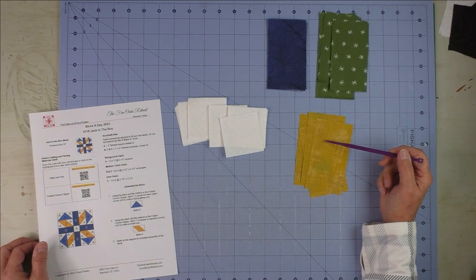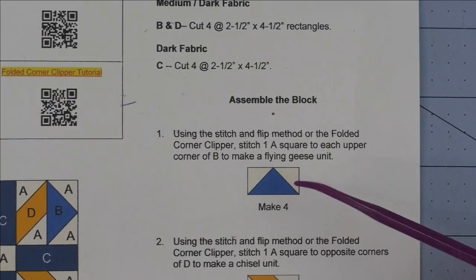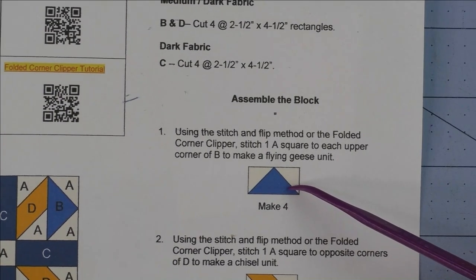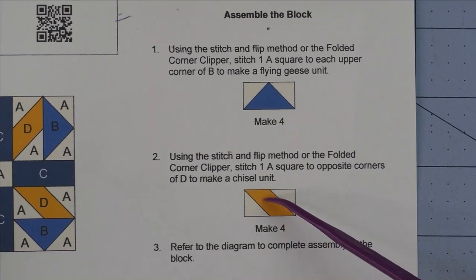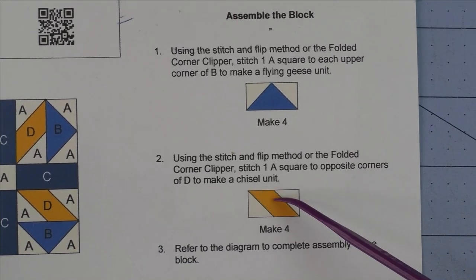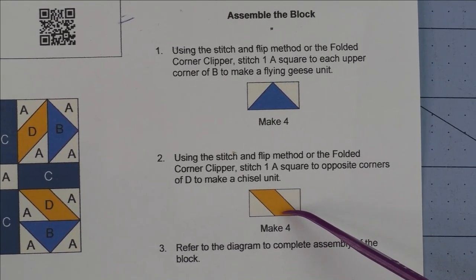There are four pieces to that. We will make four flying geese and we'll make four of these. I call them chisel units even though they're not really, but it's a chisel unit, so you'll have two squares on each one.